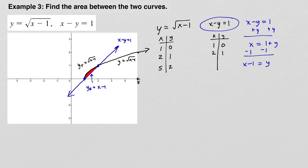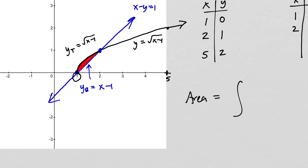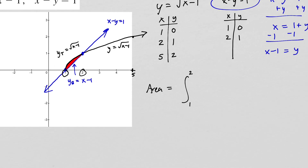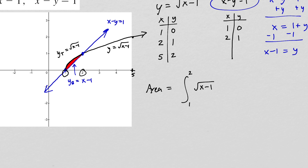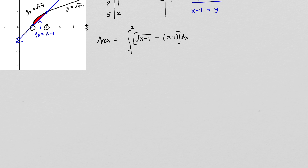To find the area, we integrate from x equals 1 to x equals 2. The integrand is the top function, square root of x minus 1, minus the bottom function, x minus 1, times dx. Distributing the negative gives the integral from 1 to 2 of √(x−1) minus x plus 1 dx. Because the square root term requires a substitution, we split this into two separate integrals.